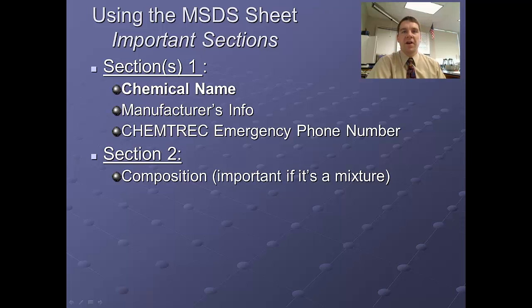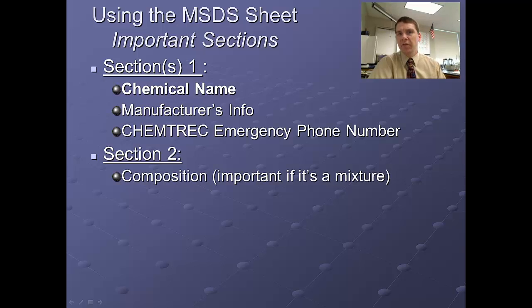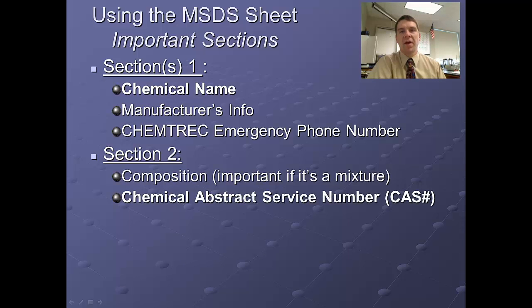In the second section, you get more detailed information about the substance itself. It will tell you whether it's a pure substance or a mixture. If it's a pure substance, you'll see a CAS number — CAS stands for Chemical Abstract Service. The CAS number is like a Social Security number for the chemical; every substance has its own unique one. Mixtures don't have CAS numbers because, by definition, they aren't pure.